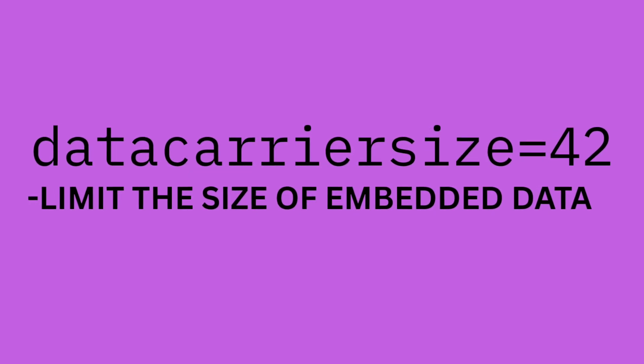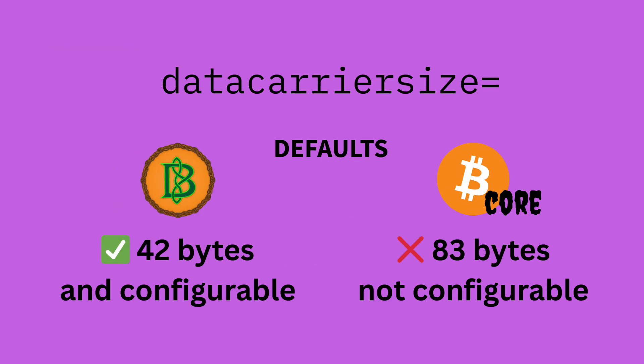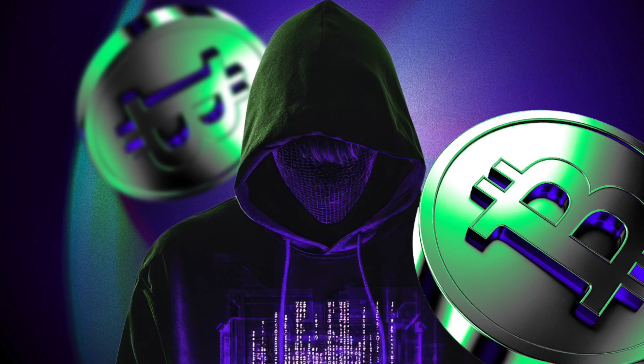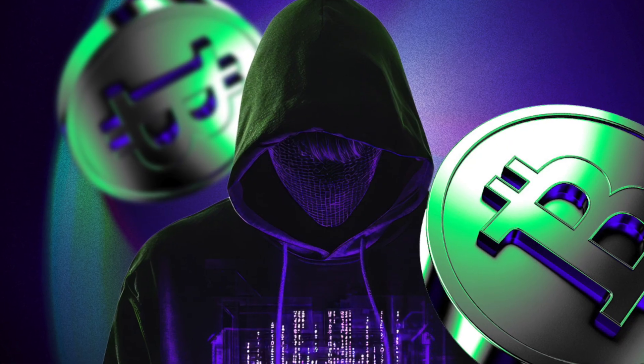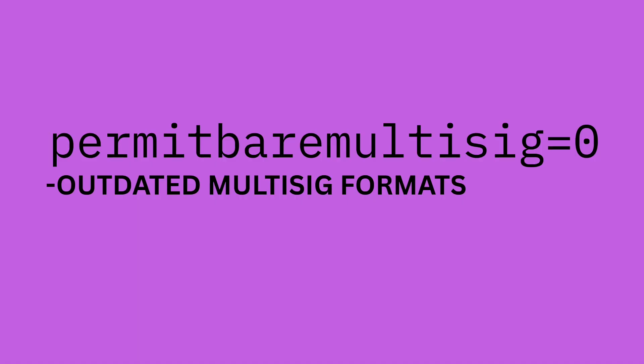The data carrier size setting defines the maximum amount of data your node will allow in an OP_RETURN field. It's how you draw the line between small, useful bits — like a SHA-256 hash or a static public key — and bloated junk like JPEG inscriptions. By default, Bitcoin Knots sets this limit to 42 bytes, just enough for Merkle proofs but too small for spam. Bitcoin Core enforces the older 83-byte limit, but as of version 29.0 this setting is no longer configurable. Core developers have signaled interest in possibly removing OP_RETURN filtering altogether in the future, but for now it remains hard-coded.